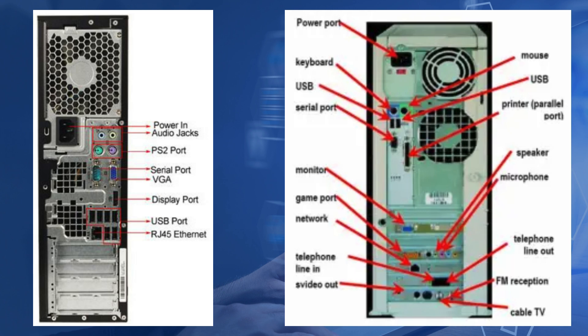In the next picture, starting from the left, we have the power port, keyboard, USB, serial port, monitor, gaming port, network port, telephone port, line-in port, S-video out, mouse port, USB port, printer port, speaker port, microphone port, telephone line-out port, FM reception port, and the cable for TV.